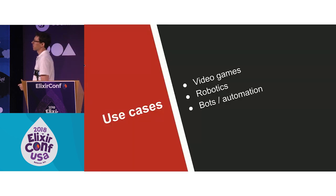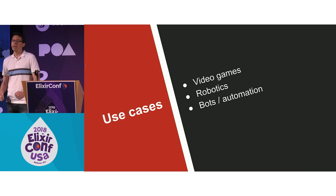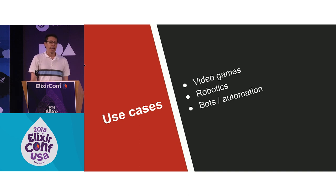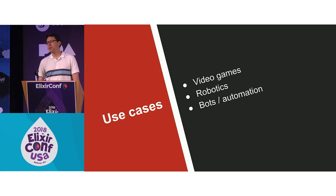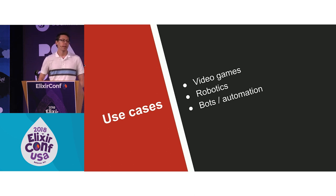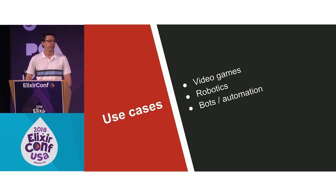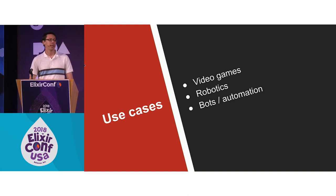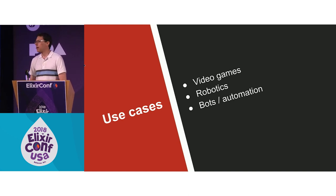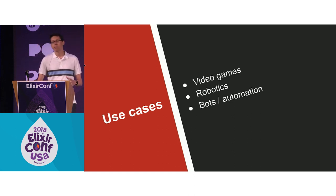Where do you see behavior trees? They're used very commonly in video games. They're also used in robotics. And the part of most interest here is you can use them for bots, like chat bots, or for automation. In fact, the reason I started looking at behavior trees in Elixir in the first place was that my colleagues and I wanted to do some automated testing, hitting our API in ways that would emulate real users, and we thought of building up behavior trees to approximate that.